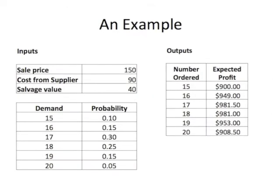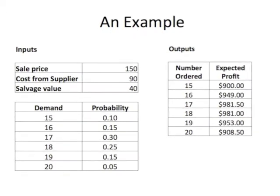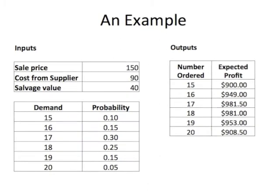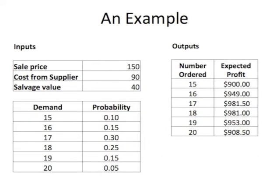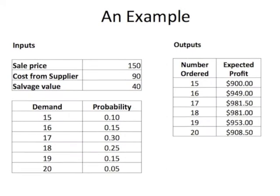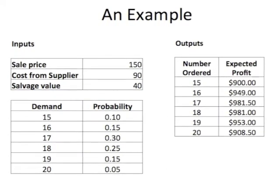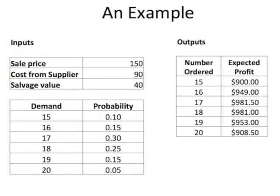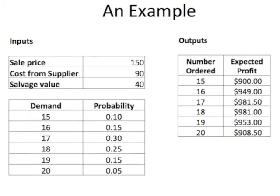Here's an example of the news vendor problem. The inputs are a sale price of $150, a cost of $90, a salvage value of $40, and a distribution of demands. This example uses a discrete distribution of demands. Using the formulas mentioned previously, we can calculate the expected profit for ordering various quantities from the supplier. You can see that the expected profit is maximized when 17 items are ordered.